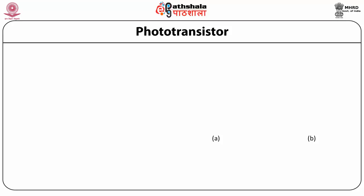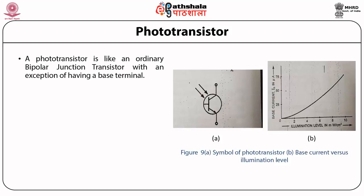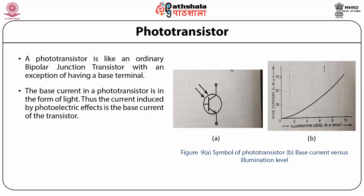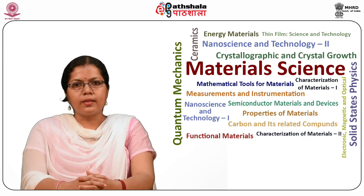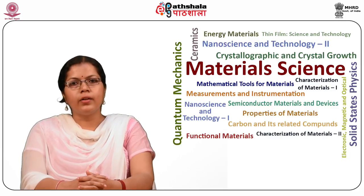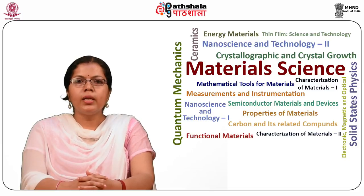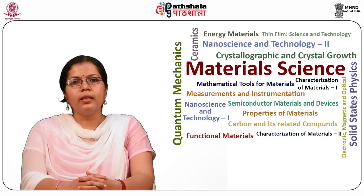A phototransistor is like an ordinary bipolar junction transistor, with the exception that the base terminal is in the form of light. The current induced by the photoelectric effect is the base current of the transistor. The device is usually packed in a metal case with a lens on top to focus light at the base terminal. The photo-generated currents of the base-collector junction are directly fed into the base of the device, producing a nominal current-amplifying transistor action resulting in the output current.